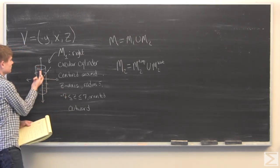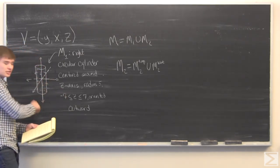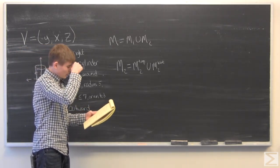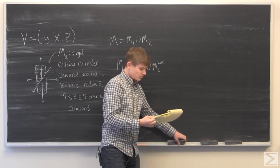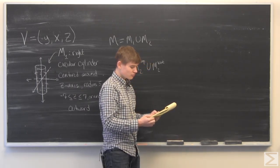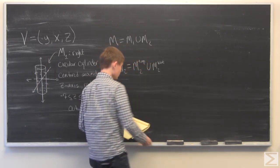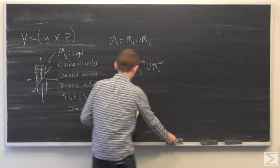And of course, this one's going to be oriented upwards and this one's going to be oriented downwards. OK, so we've done step one or part A. Part B was to calculate the flux of V through M2 using the definition of flux.